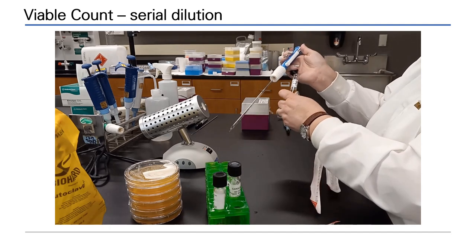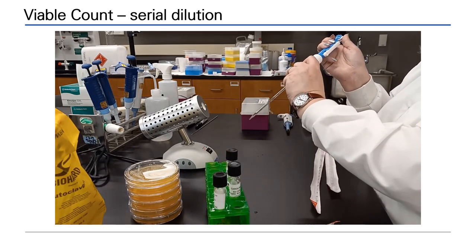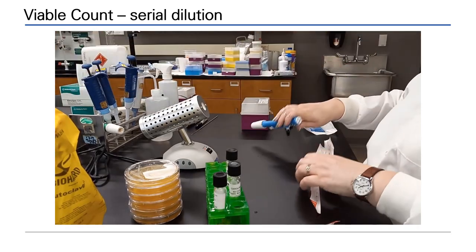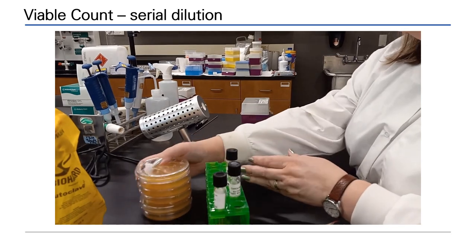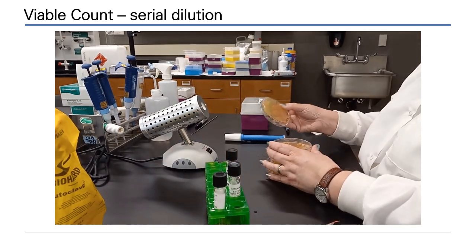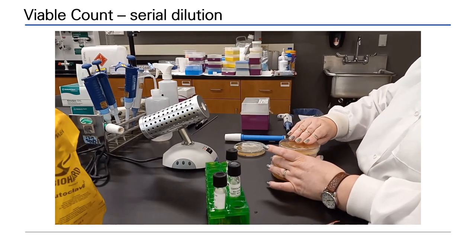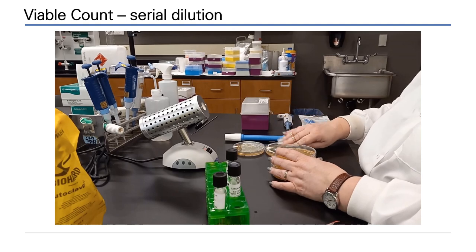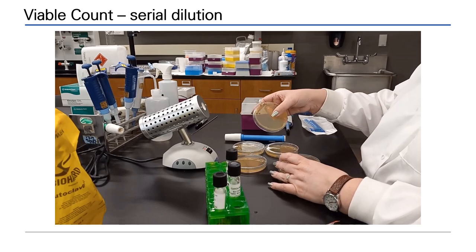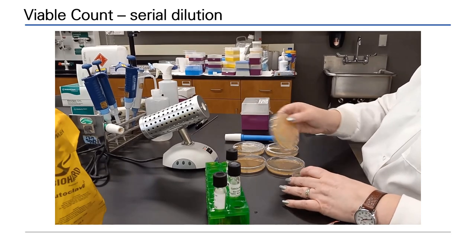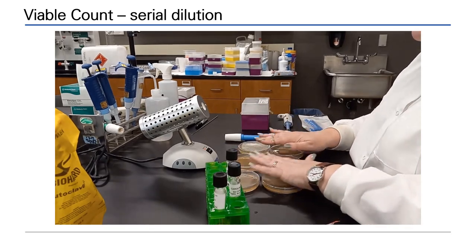Dispose of the last pipette. The serial dilution is complete now. You must move on to the next step of plating the dilutions. Remember, we cannot determine the number of cells in the original sample unless we plate them, incubate them, and allow them to grow as colony forming units. For each dilution, we have two plates. This will allow us to plate the dilution twice, count the number of colony forming units, and average them for accuracy.